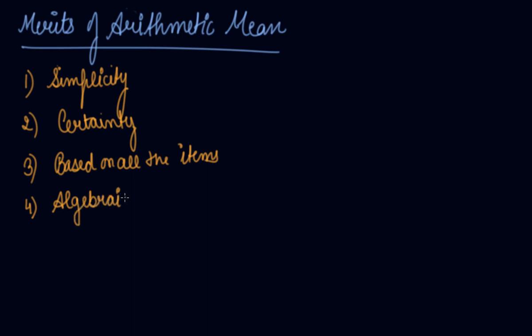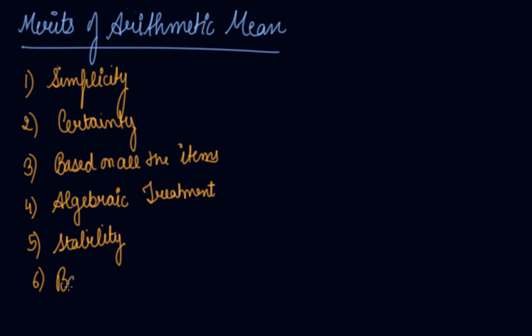The fourth merit is algebraic treatment — arithmetic mean is capable of further algebraic treatments. The fifth is stability: arithmetic mean is a stable measure of central tendency because changes in the sample of the series have minimum effect on the arithmetic mean. Sixth is basis of comparison — you can compare the arithmetic mean with other things, so it is very easy to compare.